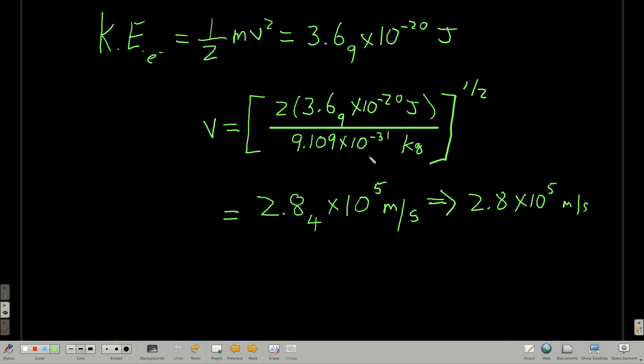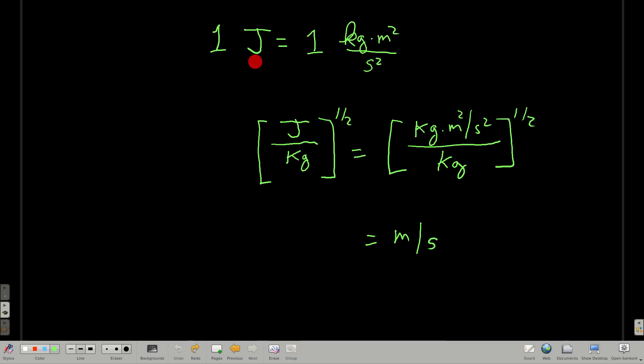But wait, look at the units. How do these joules over kilograms square root make meters per second? Well, here's how. Remember, a joule is a kilogram meter squared per second squared. So if you replace a joule with kilograms meters squared per second squared over kilograms, this is just the units from before. See, the kilograms cancel. We get meters squared over second squared. We take the square root. There it is. Meters per second.